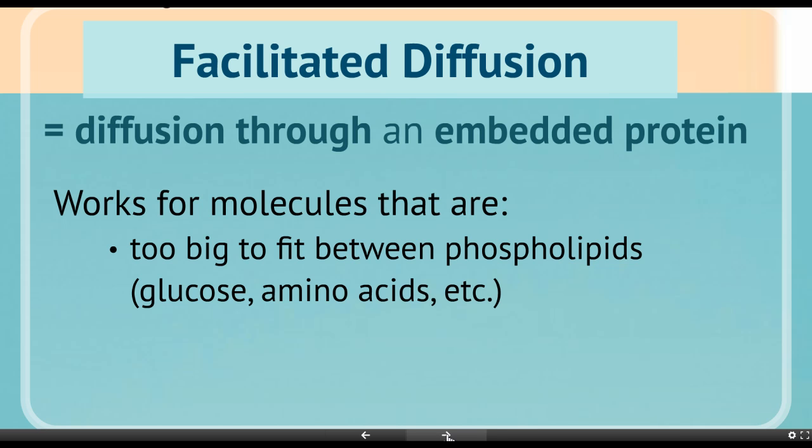Glucose and amino acids are bigger, so they need to move through a channel. You can also have very small molecules that could physically fit, but they have a charge — like magnesium or chloride — and these can interact with the heads of the phospholipids.